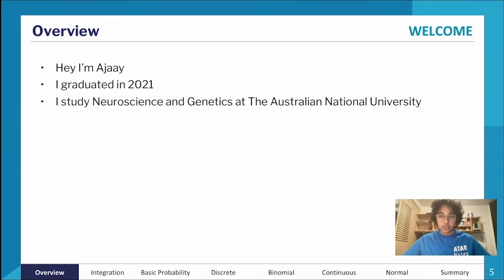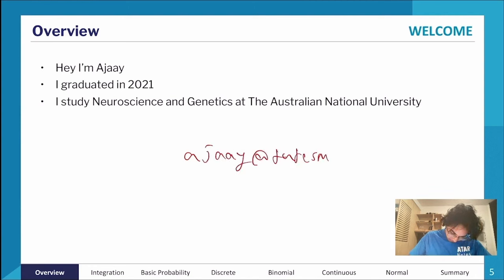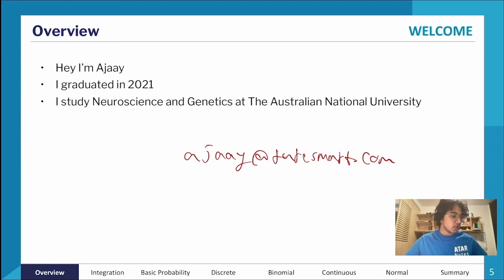My name is AJ. I graduated in 2021, so about two-ish years ago. I currently study neuroscience and genetics at the Australian National University. My email is AJ at Quesmart.com — feel free to shoot me an email about things I study, methods questions, or even advice on moving interstate, since I grew up in Melbourne and moved to Canberra for university.